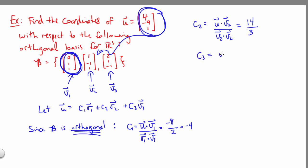And finally, to get c3, we'll take u dot v3 divided by v3 dot v3.